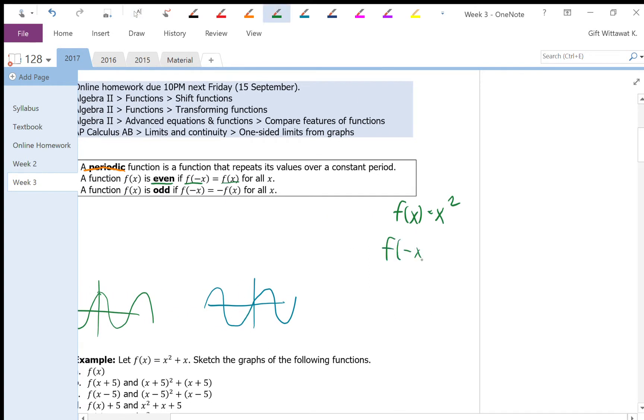That's because f of negative x is going to be negative x squared, and that's the same as x squared, which is f of x. So that means your function when evaluated at x is going to be equal to your function when evaluated at f of negative x.